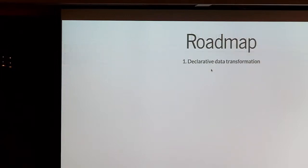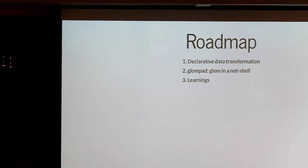Here's the roadmap. We're going to rewind a bit and talk about declarative data transformation. Then we're going to talk about Glompad, which is what you saw a moment ago — that's Glom in a nutshell. Then I'll talk about learnings from building that over the last couple months. Then we'll talk about web history — not your web history, but web history in general. And then we'll talk about how you can actually make this happen today.